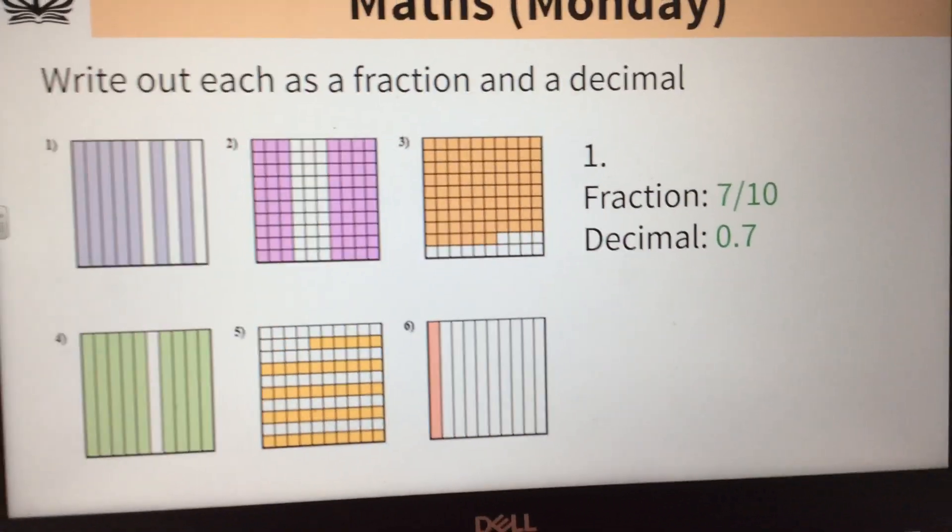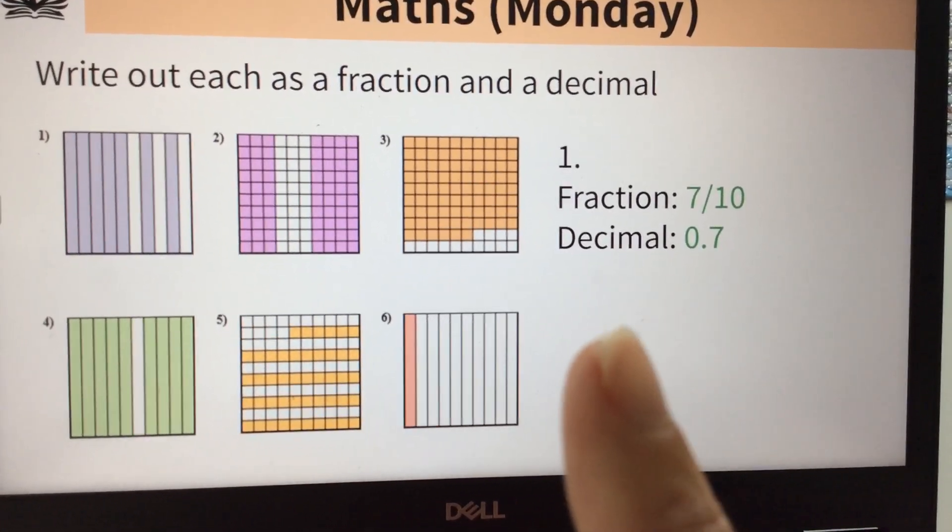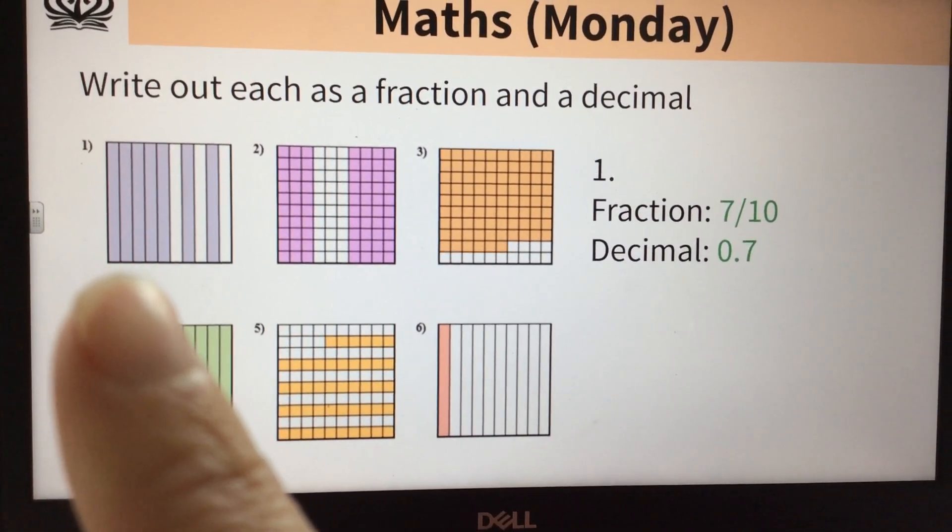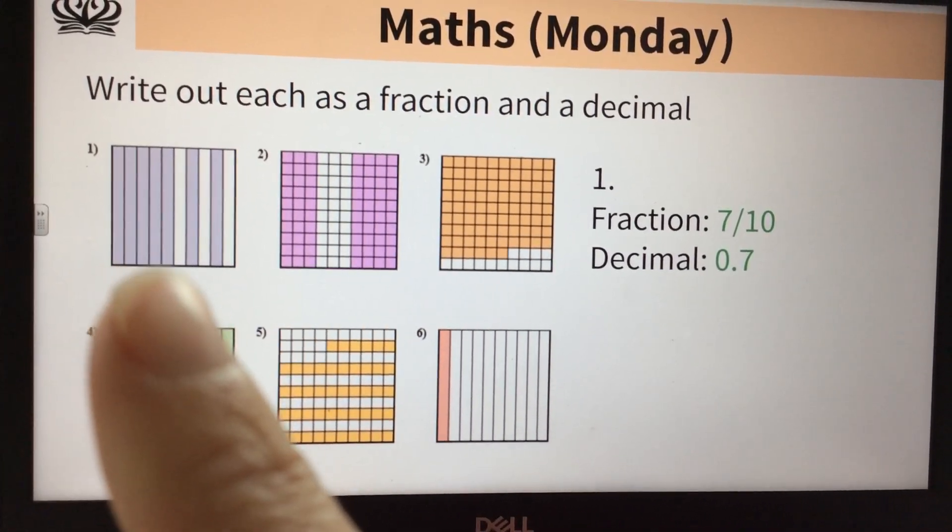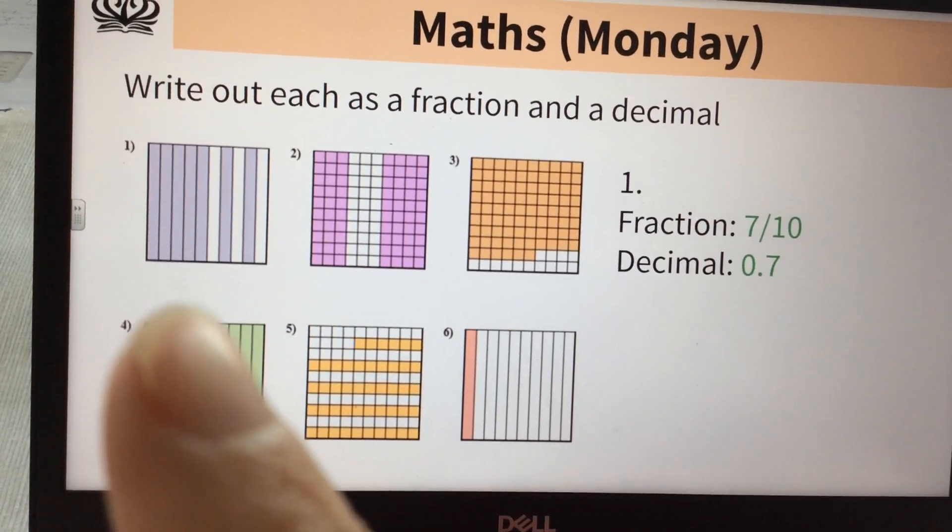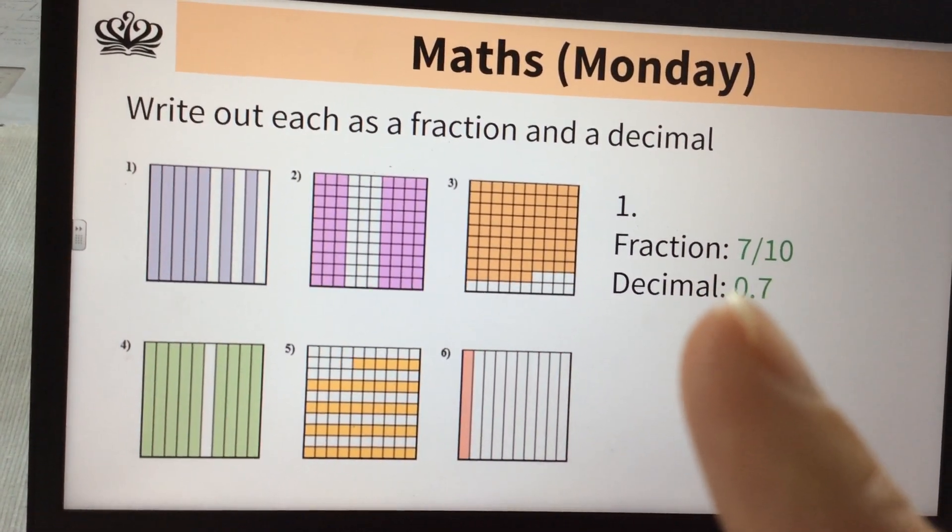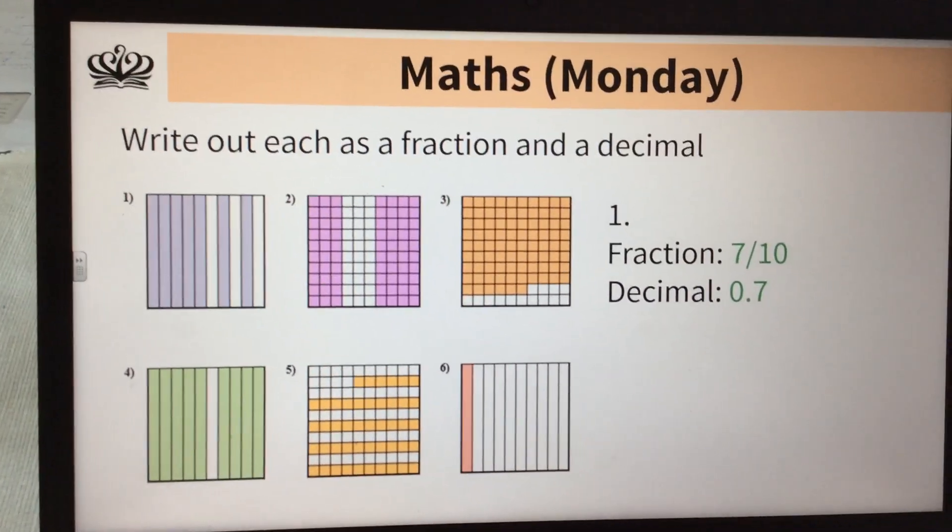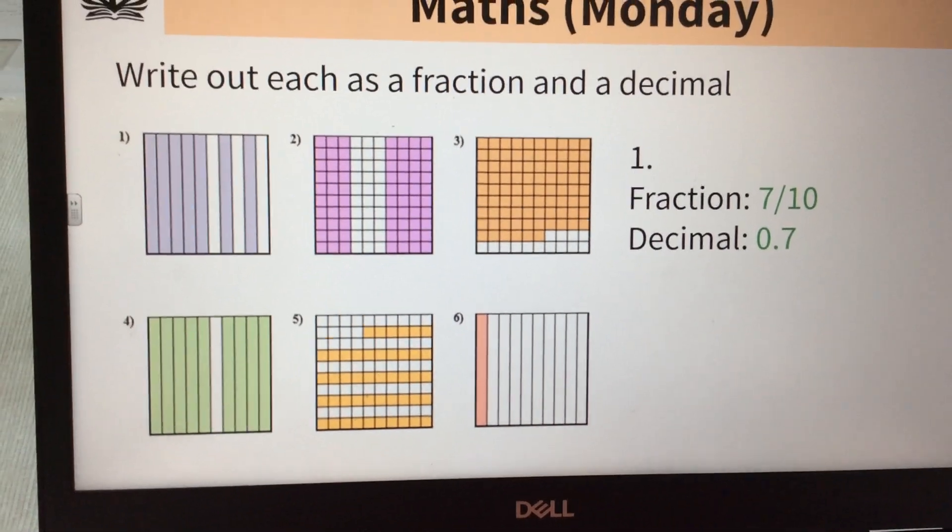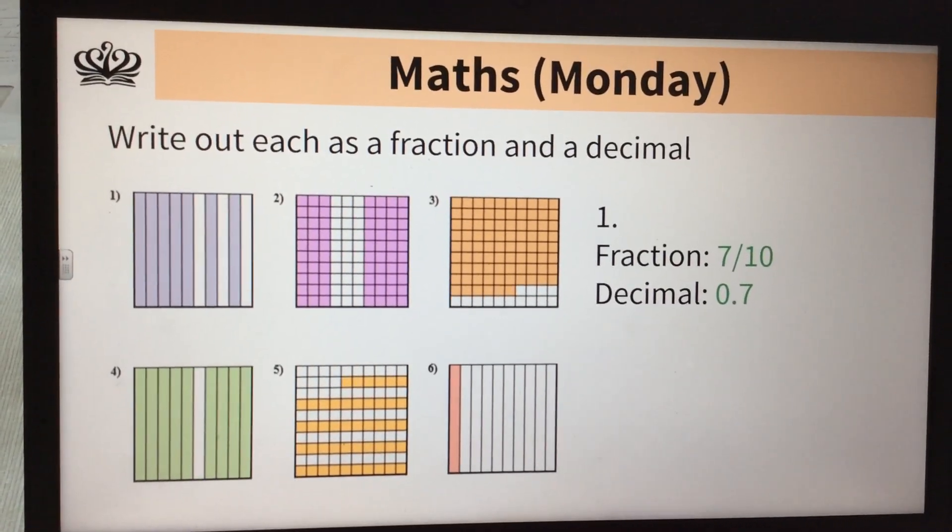And finally, you've got some more of these visual hundred squares. So you need to write each one as a fraction and as a decimal. I've done the first one for you. So maybe do the fraction first. Work out how many equal bits it's divided into. We've got ten columns. So ten is going to be your denominator. And then how many are coloured in? Seven are coloured in. So I can write that as seven tenths. And then if I've got my seven tenths, I can use that place value grid again to work out my decimal. So have a go. I would do the fraction first. What's your denominator? What's your numerator? And then use that to help you to find your decimal.